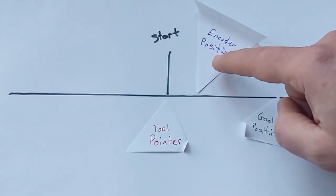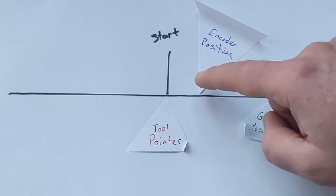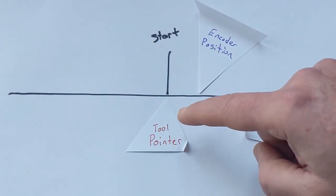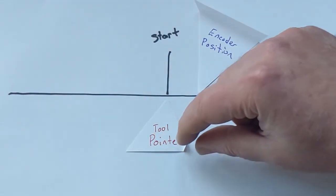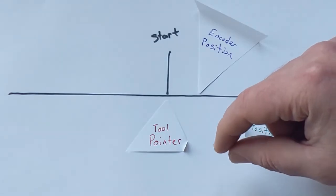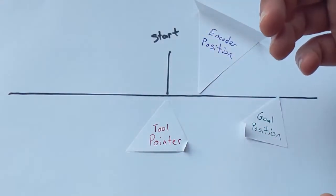So it calculates based on the encoder ticks, it translates that into full stepper pulses and those full stepper pulses are compared to the tool positions recording of how many stepper pulses have happened and that's what I use to try to figure out whether I need to move or not.